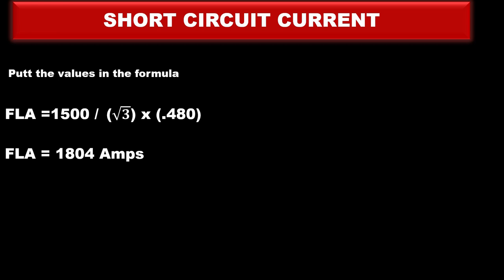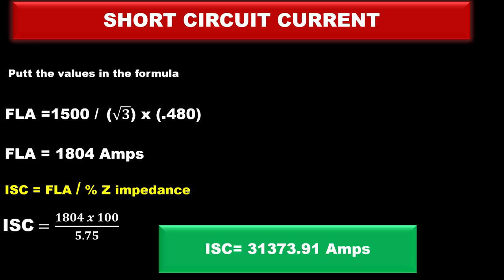Now we know that full load ampere is 1804 amperes. Put this value in the short circuit current formula. The short circuit current formula is full load divided by percent of Z impedance. 1804 multiplied by 100 divided by Z impedance 5.75, the answer is 31373.91 amperes.